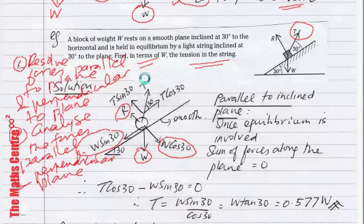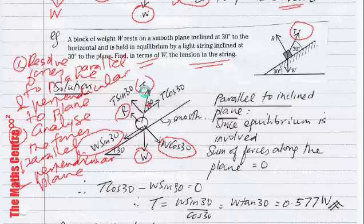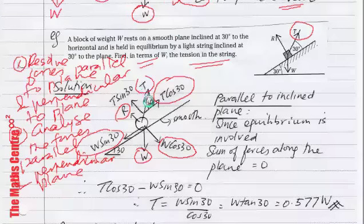Next, we have to worry about resolving T. I have the tension in the string T, and they gave me this angle of 30 degrees. The angle between the force T and the direction parallel to the plane is 30 degrees. Therefore, the component in this direction will be T cos 30, and the other component will be T sin 30.